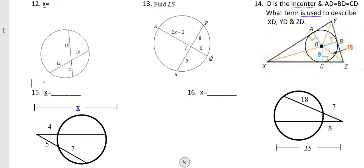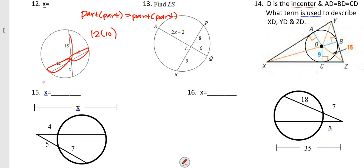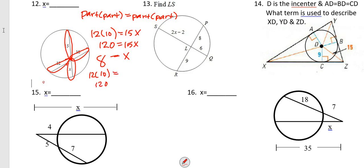For problems 12 and 13, the formula is part times part equals part times part. For number 12: 12 times 10 = 15 times x. That gives 120 = 15x, so x = 8. Checking: 12 times 10 is 120, and 8 times 15 is also 120 — correct.